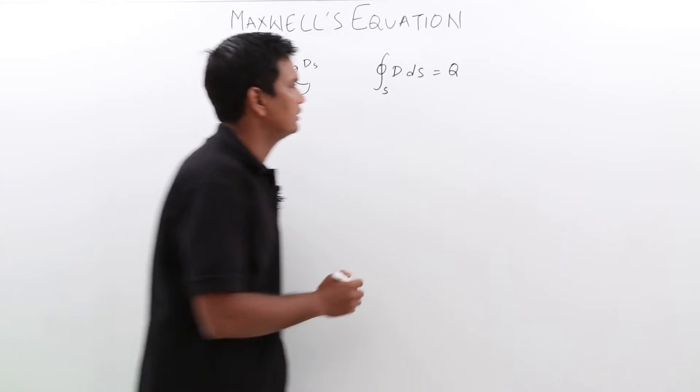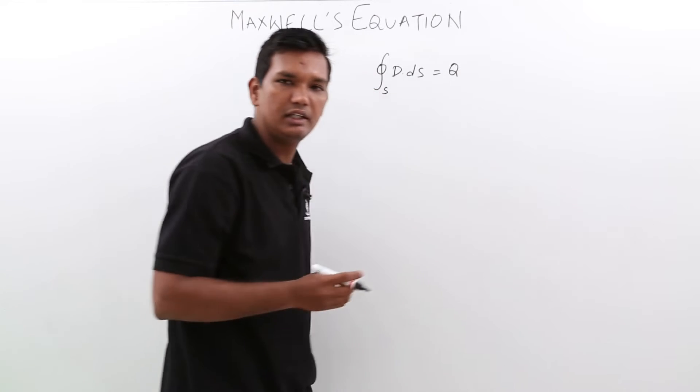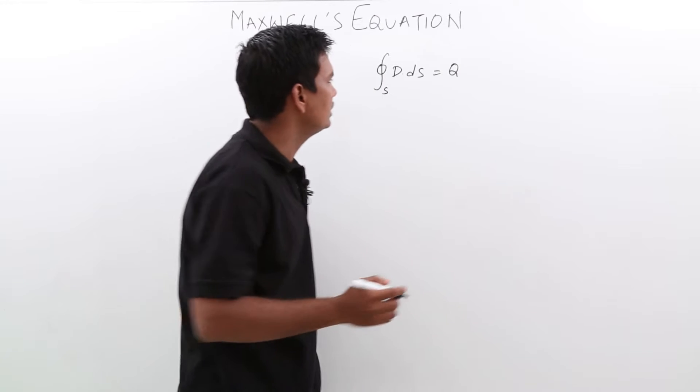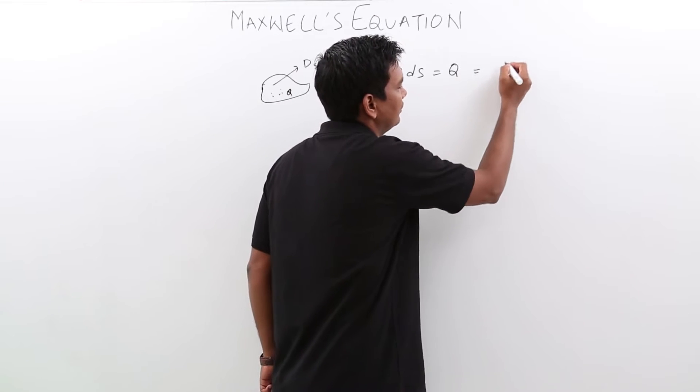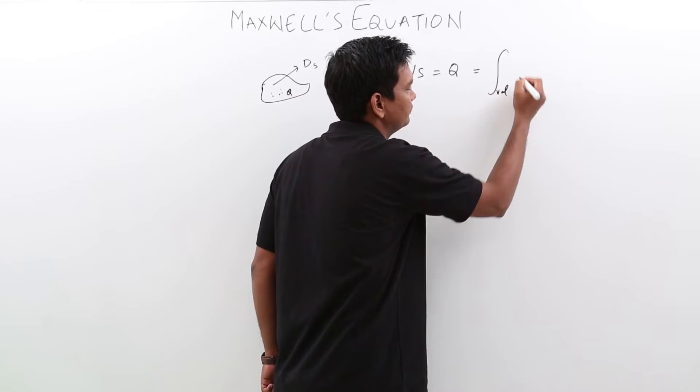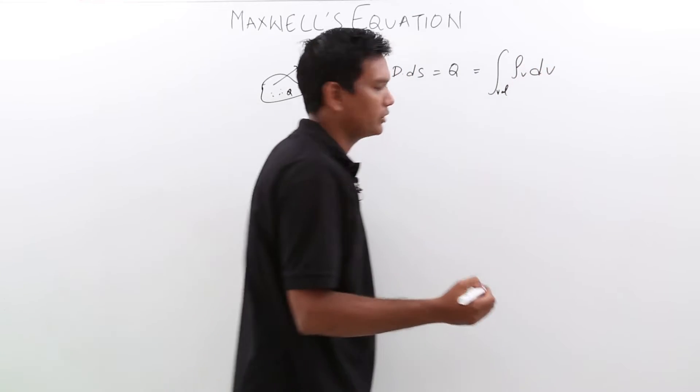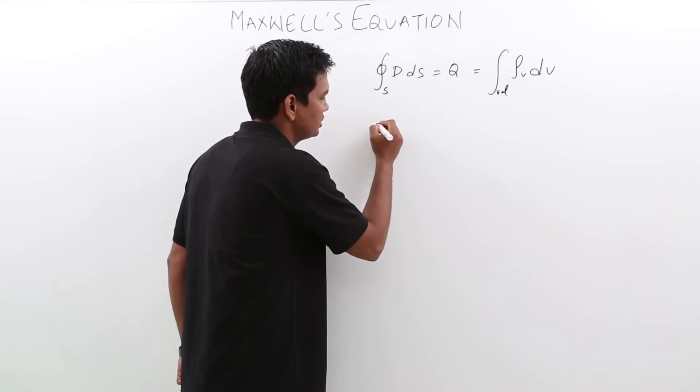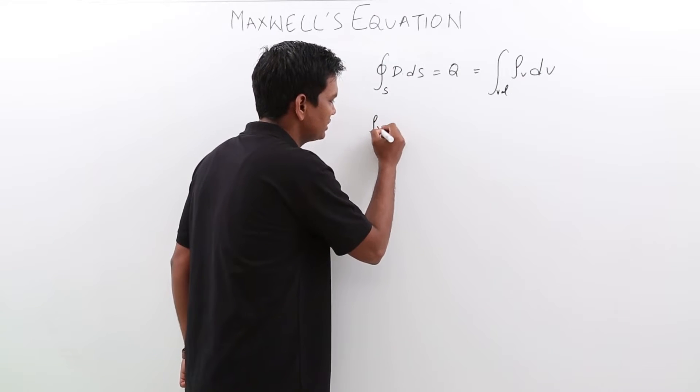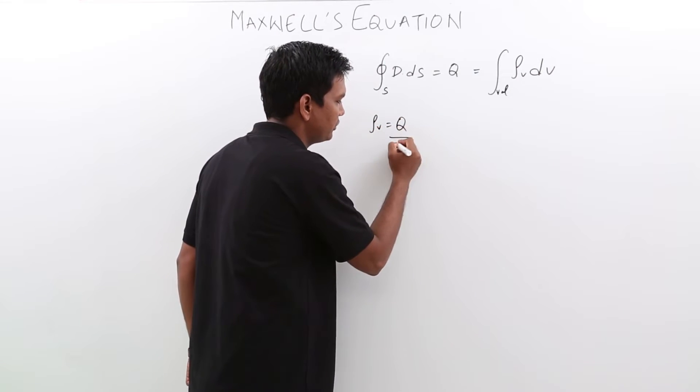We also have seen that I can represent charge in terms of volume charge density, which would be the integral over the volume of rho_v dV, because volume charge density is charge per unit volume.